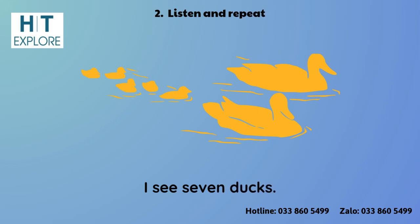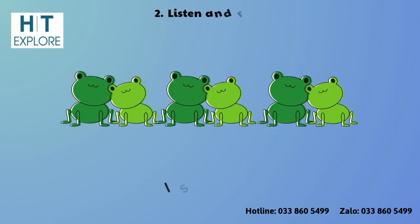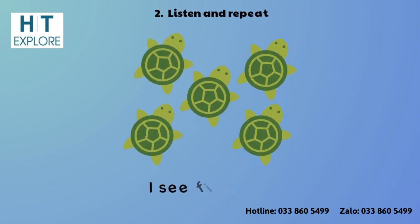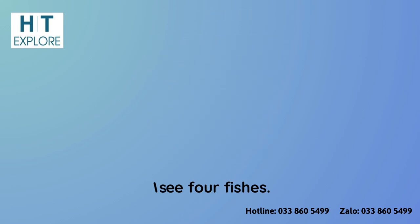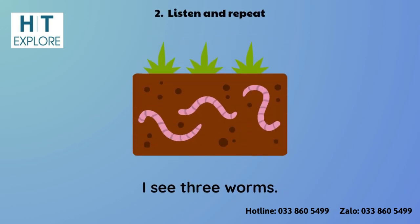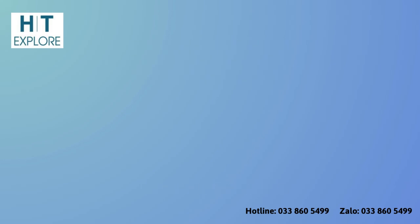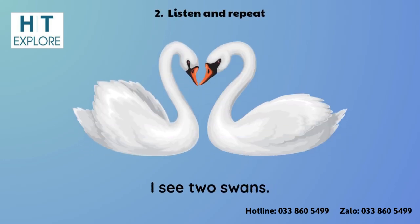I see 7 ducks. I see 7 ducks. I see 6 frogs. I see 5 turtles. I see 4 fishes. I see 4 fishes. I see 3 worms. I see 3 worms. I see 2 swans.